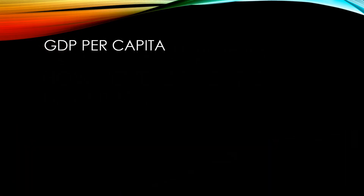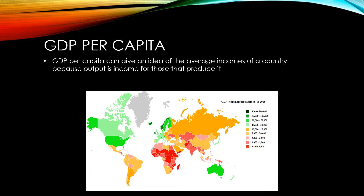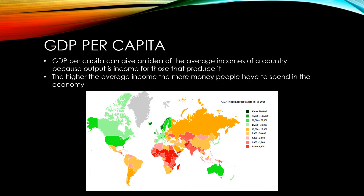One obvious way to compare development between countries that we already know about is GDP per capita. This is because GDP per capita can give a good idea of the average incomes of a country, because output is income for the people that produce it. The higher the average income, the more money people in that country have to spend in their economy, and therefore it's likely to be more developed.